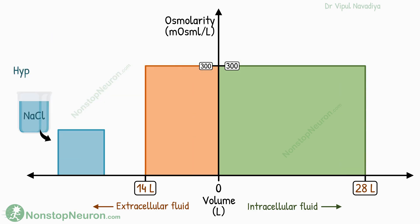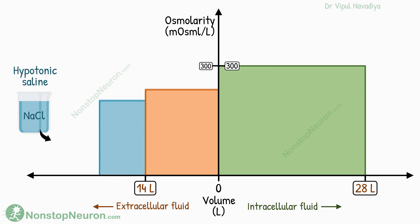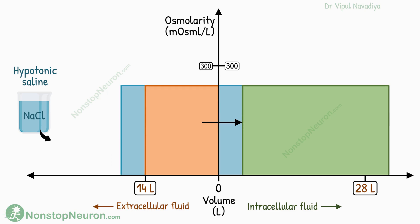Now let's see the effects of hypotonic saline. This one has lower osmolarity than body fluids and it decreases the osmolarity of the extracellular fluid. So the osmotic gradient is from outside to inside, and the water moves in that direction. The net result is an increase in intracellular fluid volume. Some of the added fluid stays outside, so there is an increase in extracellular fluid volume too. And osmolarity decreases on both sides.